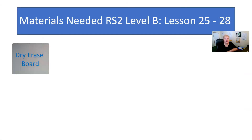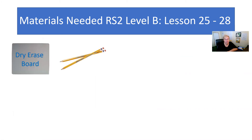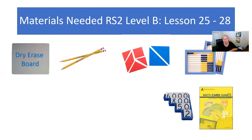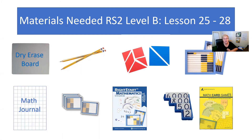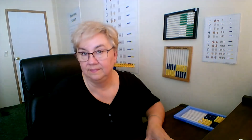Let's see what materials will be needed this week. You're going to need a dry erase board, at least two pencils preferably not the same length, your tangram set, the abacus, your math card games with the place value cards, the worksheets, and abacus tiles. The abacus tiles are a new item — they almost look like business cards. And the math journal, which is found in the worksheets — we are going to use it this week.